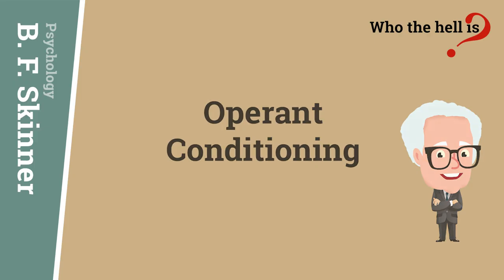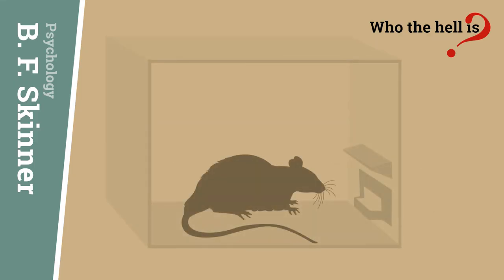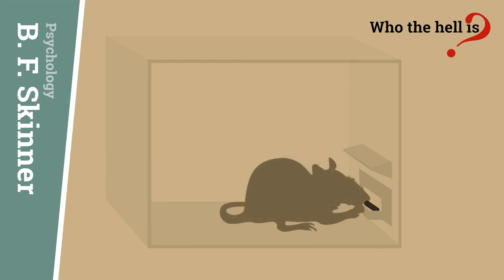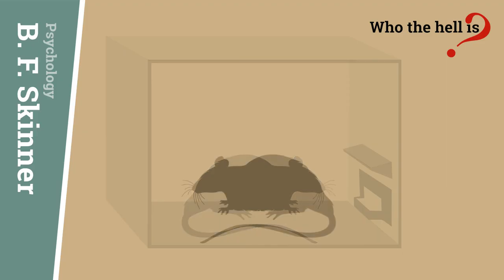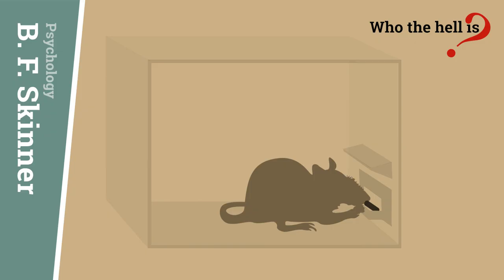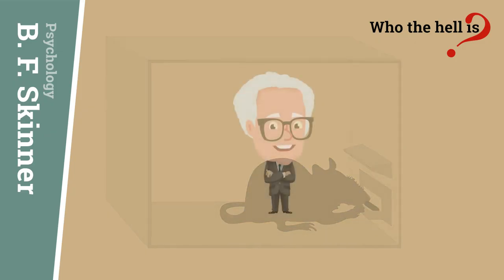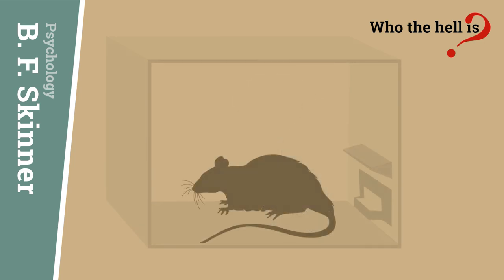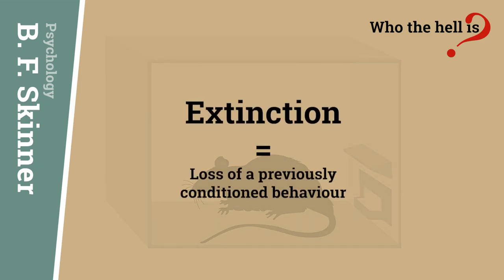He began by inventing a box with a lever, which became known as the Skinner box. The design was simple: if a hungry rat placed inside the box pressed the lever, a food pellet would be delivered to the rat via a glass tube. However, the rat would first need to press the lever, which could take a while as it explores the new environment. Once the rat does press the lever, the food pellet delivered would act as a reinforcer — a consequence that increases the chances of the rat repeating its lever-pressing behaviour. Skinner also discovered that this process could be reversed: by halting the delivery of food pellets, the lever-pressing would diminish. Skinner called this loss of a previously conditioned behaviour extinction.